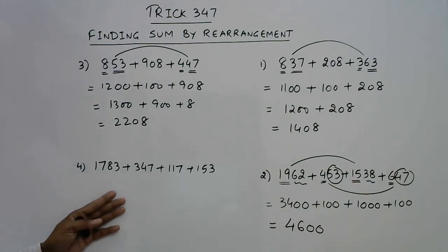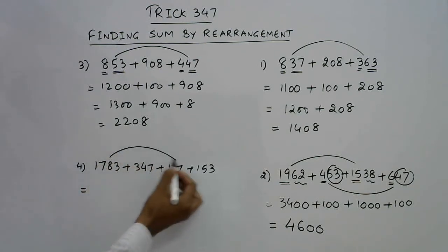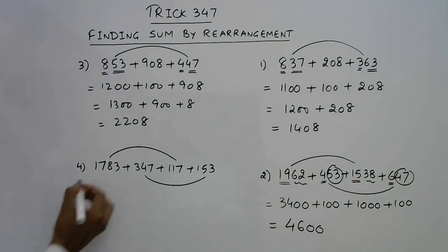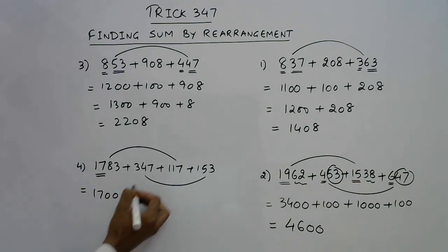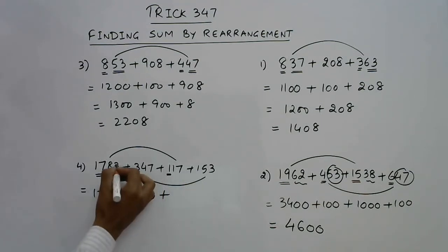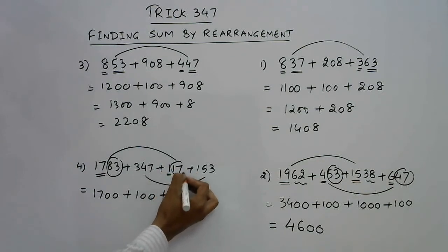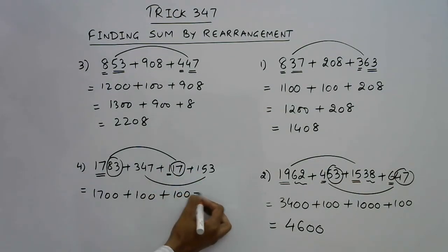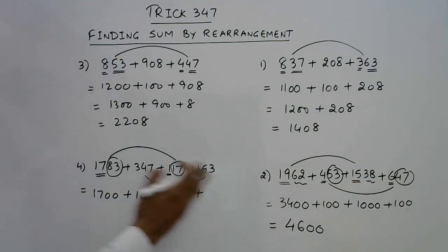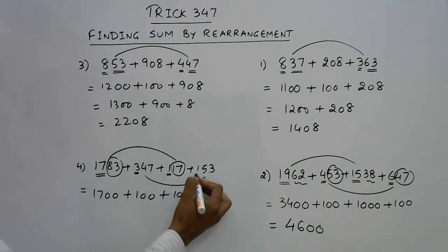Let's have one more problem. In this question we have 3 and 7 here and 7 and 3 here, so we can pair up like that. See, this is 1700 plus 100, and 83 and 17 add up to 100, so this is done.